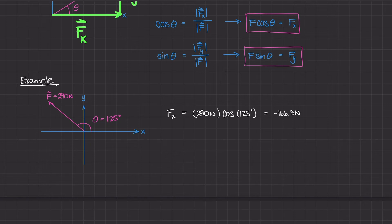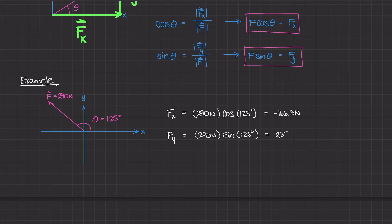Now for Fy: using the second equation, 290 Newtons times sine of 125 degrees gives us 237.6 Newtons, and this is positive. That makes sense because this vector is acting up and to the left, so you know the y-component is going to point up and be positive.